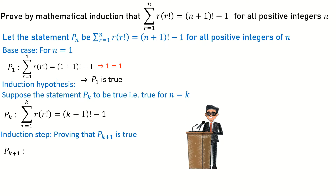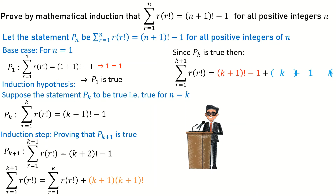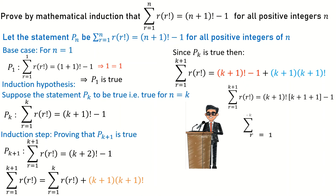Using the fact that it is true for n equal to k, I need to prove the statement P(k+1). We begin with the left hand side, which is summing from r to k plus one — this is the same as summing from r to k plus the k plus one term. The k plus one term is k plus one times k plus one factorial. Since it is true for n equal to k, I replace the sum from one to k by the expression in red, which is k plus one factorial minus one, and then add the k plus one term. From there I can factor out k plus one factorial.